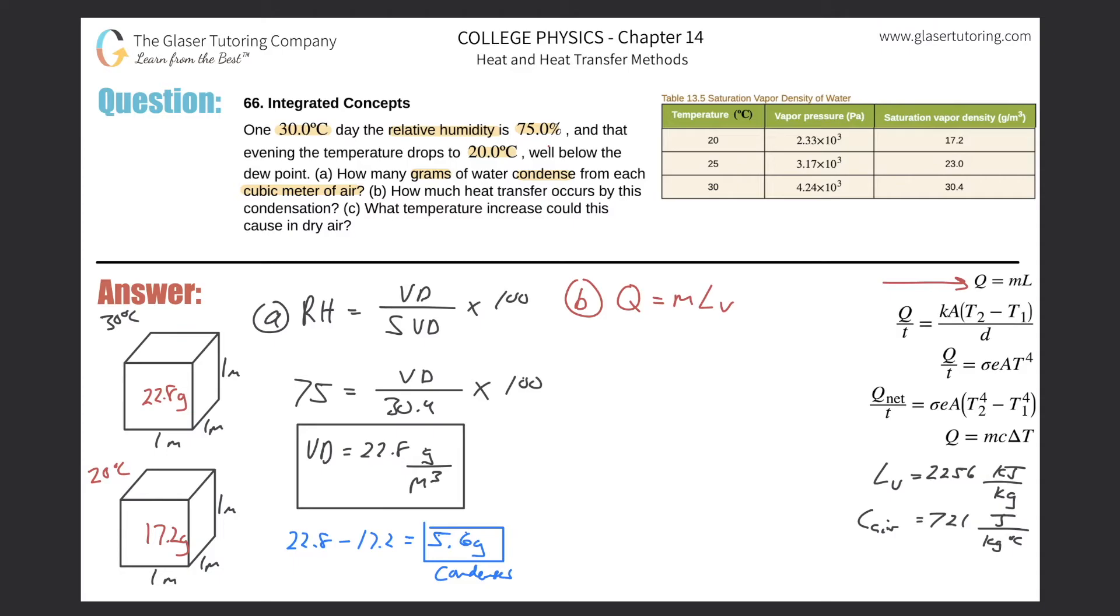So now here we're calculating Q. The mass has to be in terms of kilograms now. So do divide that by 1000. So 0.0056 multiplied by the latent heat of vaporization. Got that from the table. This is 2256 kilojoules. We might want to convert that into joules. So just multiply that by 1000 just so we have our Q in joules.